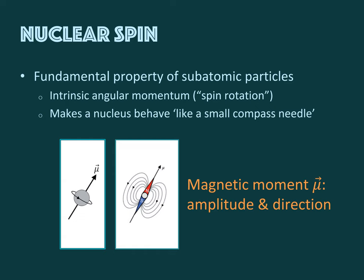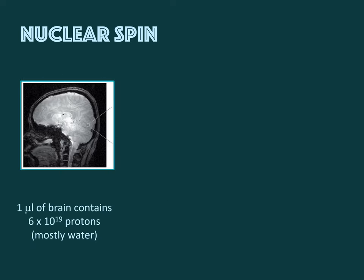Each and every nucleus with non-zero spin has, like the compass needle, a magnetic moment defined by its amplitude and its direction. The simplest nucleus with a non-zero spin is the hydrogen nucleus — which is just a proton. Since every water molecule has two hydrogens and about 80% of the human body is water, we have a lot of protons in the brain — about 10 to the power of 19 in a microliter of brain.